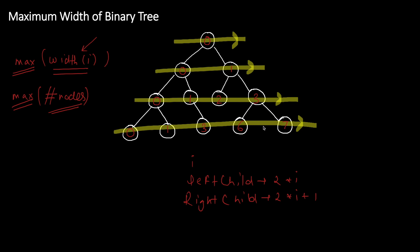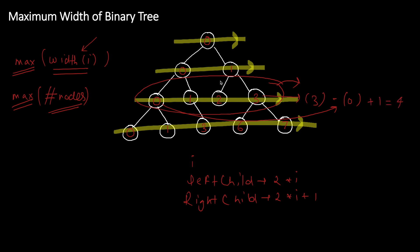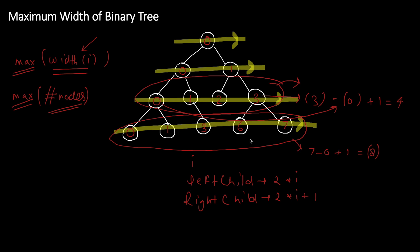To calculate the width of each level, we get the index of the last node and subtract the index of the first node, then add 1. For example, if the last node index is 3 and first is 0, the width is 3 - 0 + 1 = 4. For another level, last index 7 minus first index 0 plus 1 gives 8. We return the maximum of all these widths.